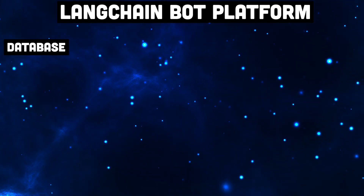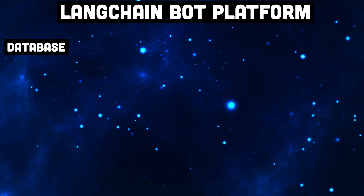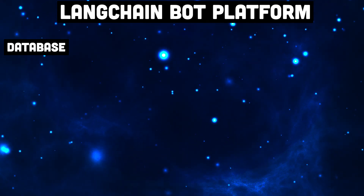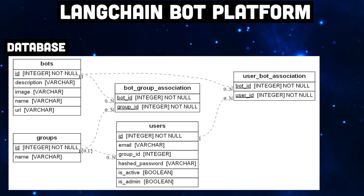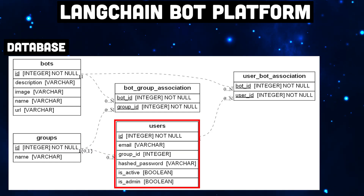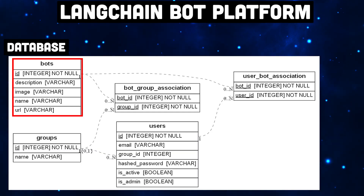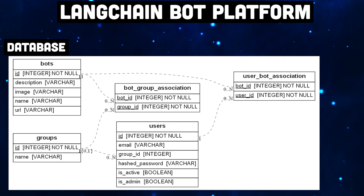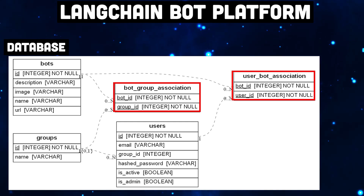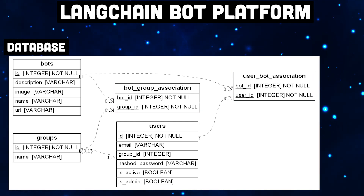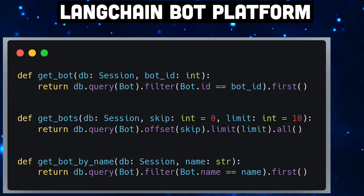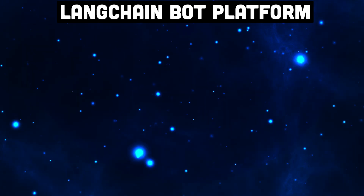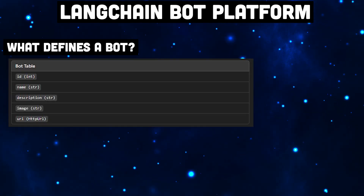Naturally, we also need to persist this data. A SQL database is perfect for this. We'll define a schema with three tables: users, groups and bots. These will be linked through two join tables. For each request, the appropriate database operation will be executed. But first, what actually makes a bot a bot?